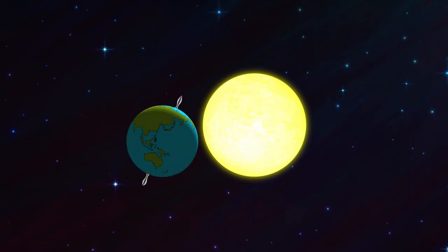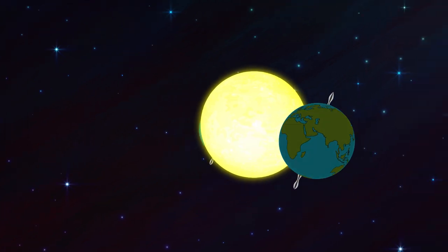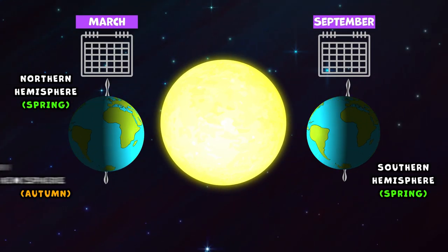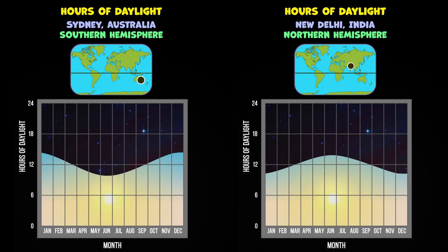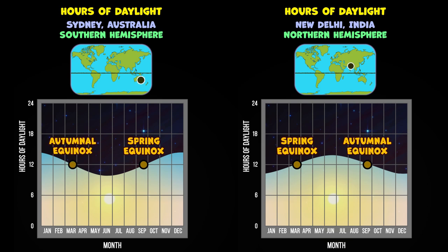In March and September, both hemispheres get roughly the same amount of sunlight. One hemisphere experiences spring, while the other experiences autumn. The days on which each hemisphere gets exactly the same amount of sunlight are called equinox. The spring equinox occurs in March in the North and September in the South. The autumnal equinox occurs in September in the North and March in the South.